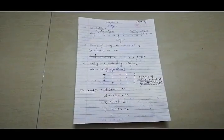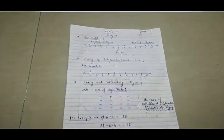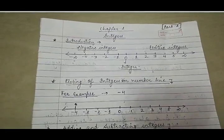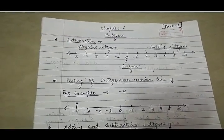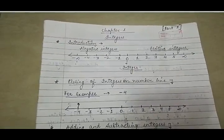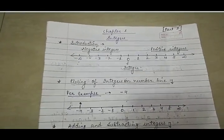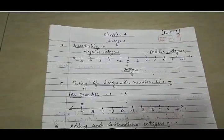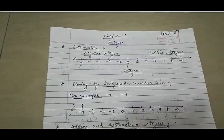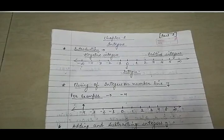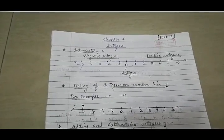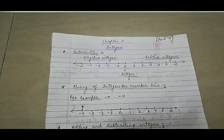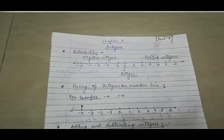Before coming to the next topic, we will see a short introduction of integers. As you can see, I have drawn a number line. On the right hand side I have written all the positive numbers, and on the left hand side all the negative numbers. So: 0 is an integer, 1, 2, 3, 4, 5 are positive integers, minus 1, minus 2, minus 3 are negative integers. 0 is neither positive nor negative, but it is an integer.